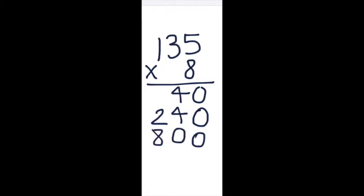Next, we will move to the hundreds place. We will multiply 100 by 8, which is 800. Finally, we will add the products together, giving us 1080 as the answer.